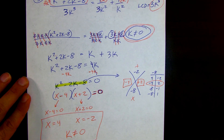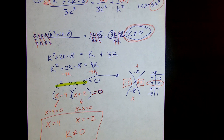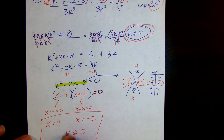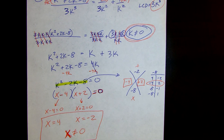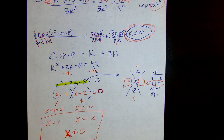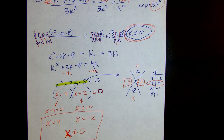Our restriction from the beginning: k cannot equal 0. So we end up with k equals 4 and k equals negative 2 as our answers, with k cannot equal 0. On Thursday we'll go over all the homework problems. The next lesson is very closely related to this, so don't worry too much. I'm going to stop the video here — thank you.